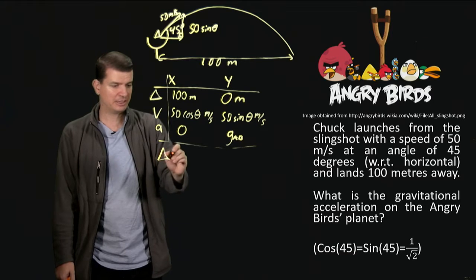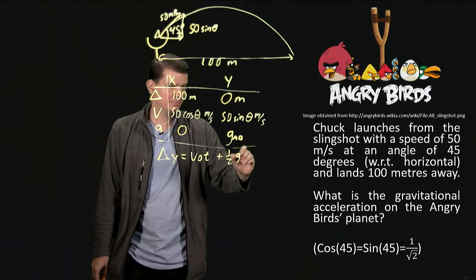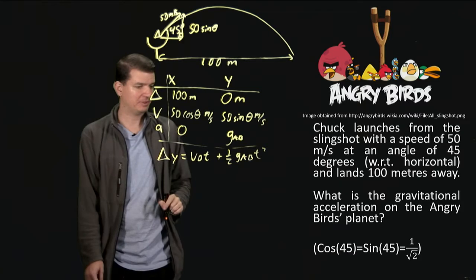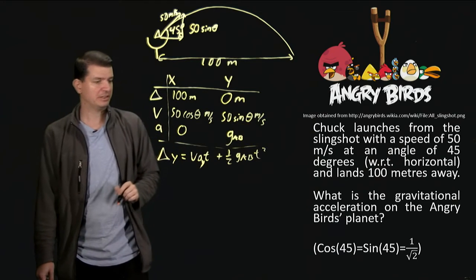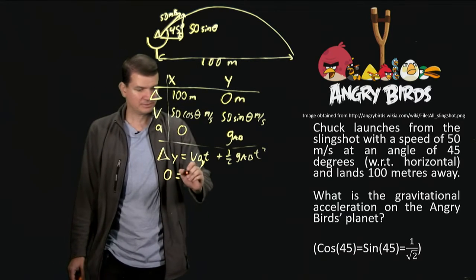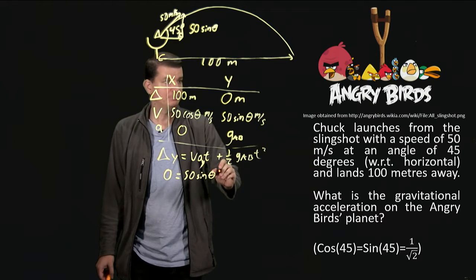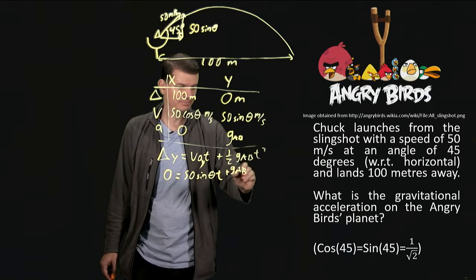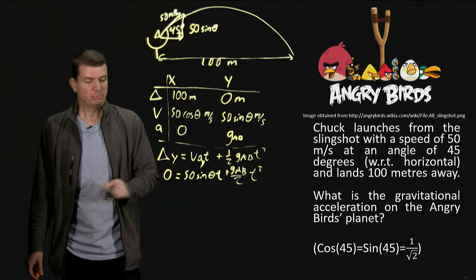So we'll write down that delta y is equal to v zero t plus one-half this g t squared. So our gravitational acceleration is the acceleration that we feel. V zero in the y direction, I should put a subscript y on that, is this 50 sine theta. And delta y is zero, so let's plug some of these things in. That's zero. That's 50 sine theta times a time, which we don't know, plus this g_ab on two times this time squared, which again we don't know. So we've got a quadratic equation, but it's all equal to zero. There's no constant offset.